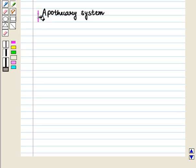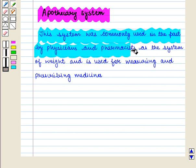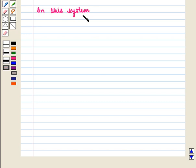So first of all we shall discuss apothecary system. This system was commonly used in the past by physicians and pharmacists as the system of weight and is used for measuring and prescribing medicines.